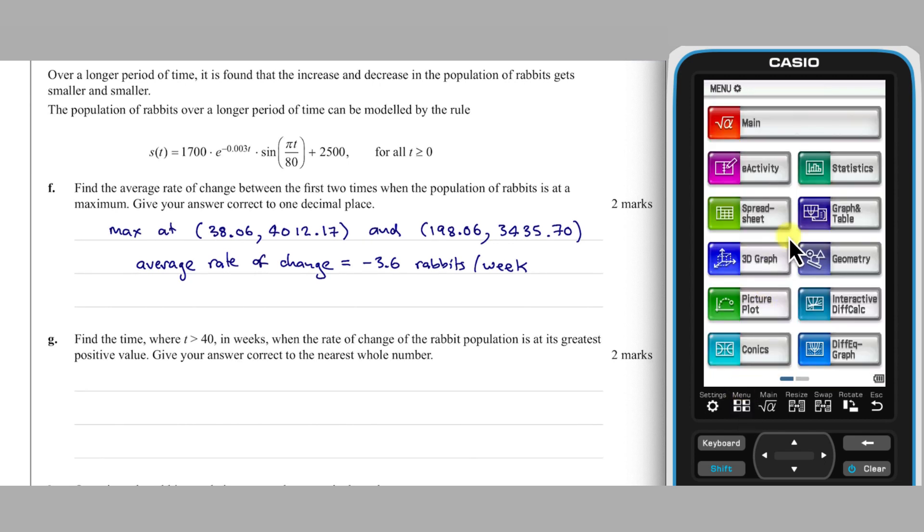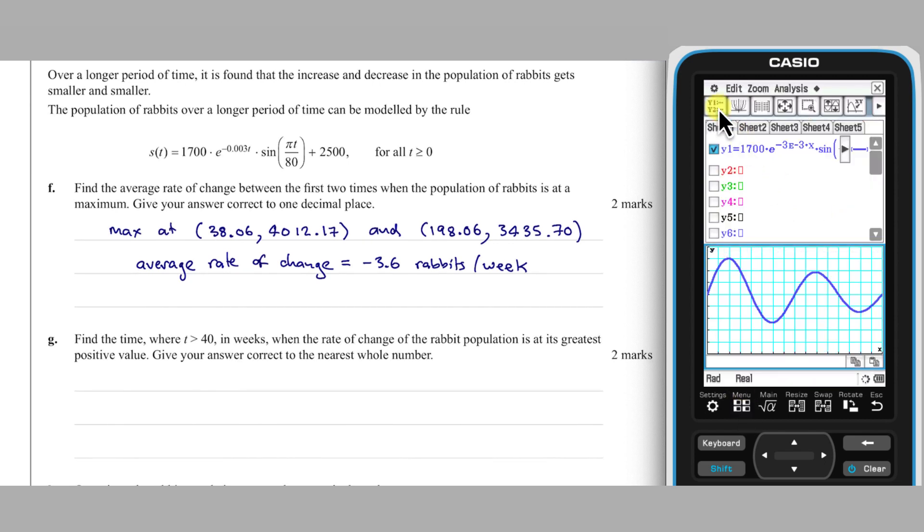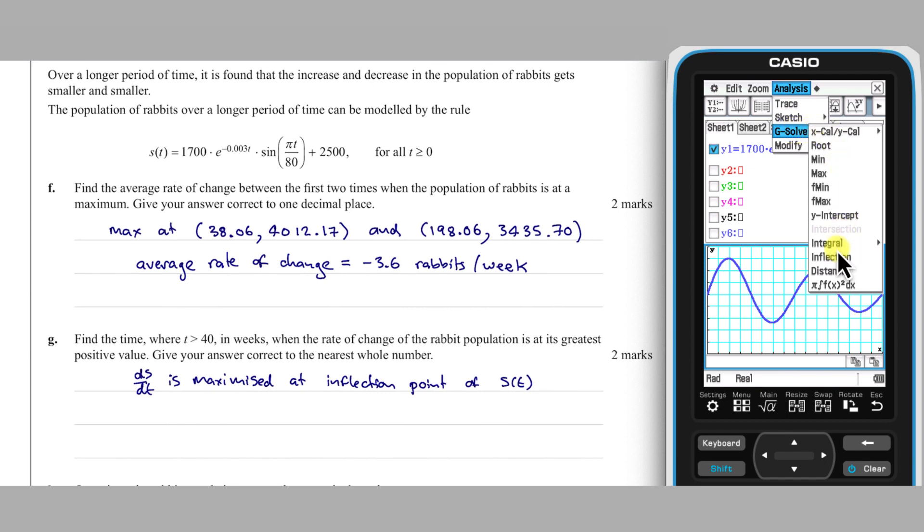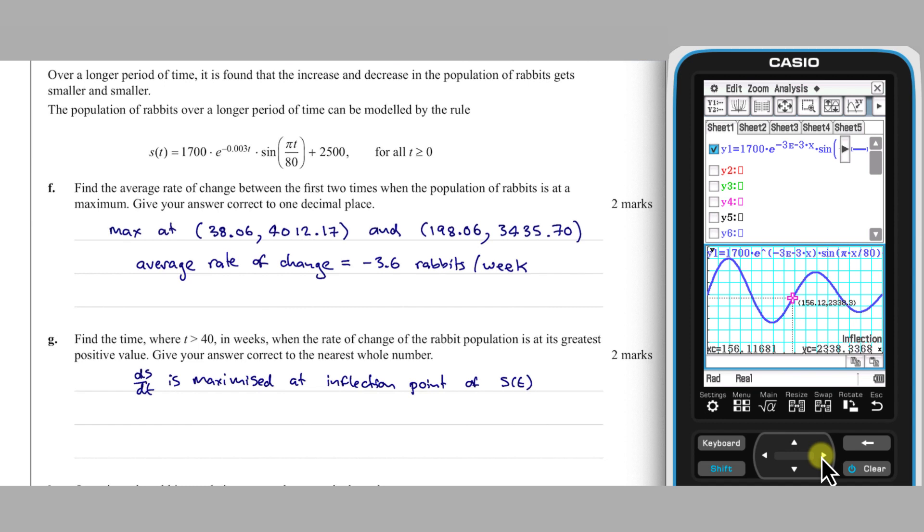Part G: To answer this question, I'm going to return to that graph of the model of the rabbit population. The rate of change of the rabbit population will be maximized at the second inflection point that we can see on this graph. I'm going to find this point using Analysis, G-Solve, choose inflection, and then tap right to move to the point required. As it is the time we require, our answer is 156 to the nearest whole number.